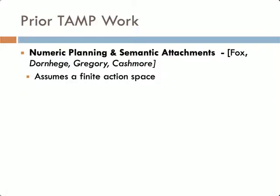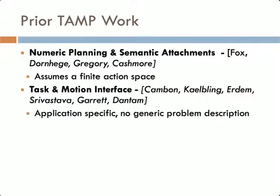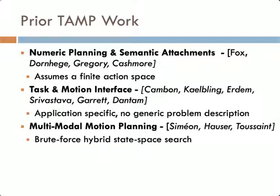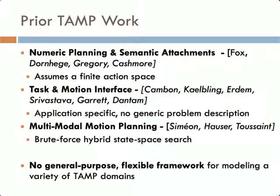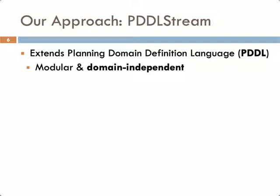Several lines of work related to task and motion planning stem from both the AI and robotic planning community. However, each of them typically has at least one of the following drawbacks: they either assume a finite action space, so the set of placements and robot configurations would have to be given a priori; they are very application-specific and lack a generic problem representation, making them difficult to transfer to new domains; or they resort to a brute-force state-space search. In our work, our first contribution is to address these issues by proposing a general-purpose framework for modeling TAMP domains with infinitely many actions. We present PDDLStream, a planning framework that can meet these limitations.